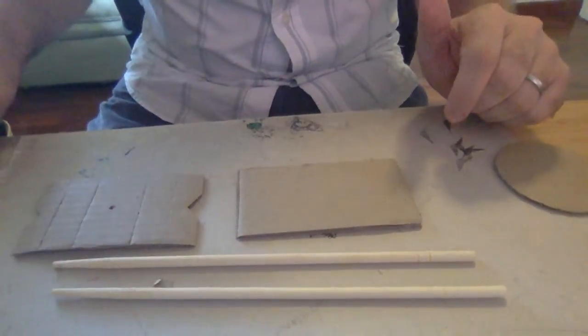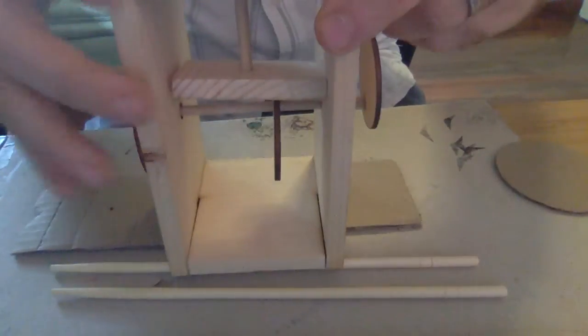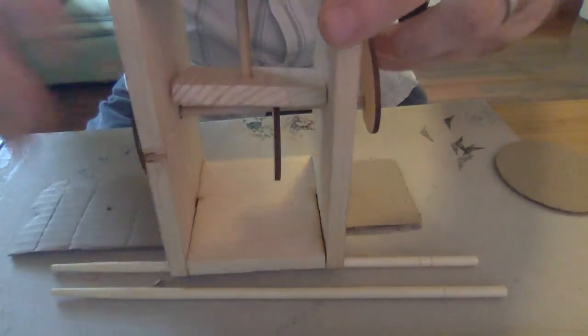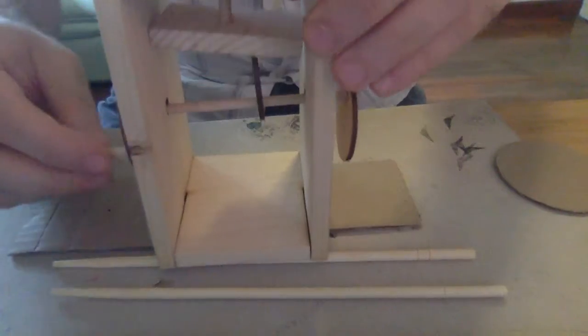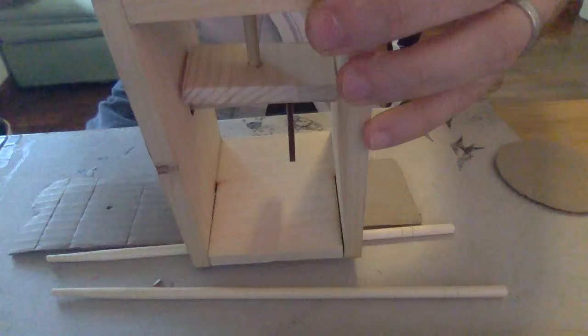We're going to make a follower in cardboard. So the follower is this piece right here, which when I roll this, this is going to go up and down.